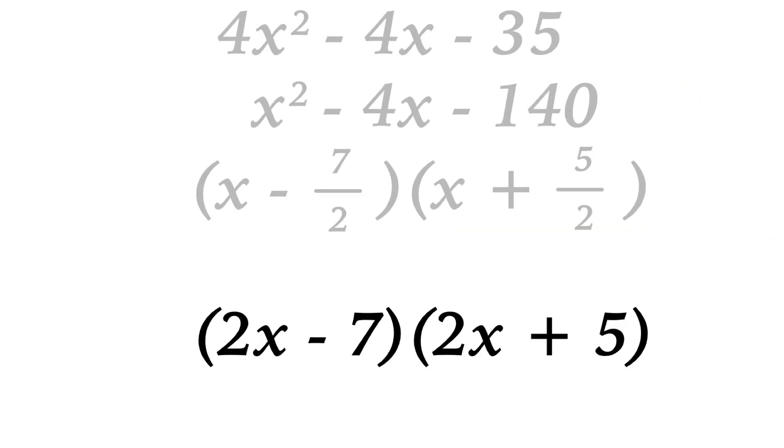And we use that 2 in the first, the 7 over 2. We take the denominator to be a leading coefficient and drop the 7. Again, the 2 in the denominator becomes a leading coefficient, and we bring down the 5. So 4x squared minus 4x minus 35 factors into 2x minus 7 and 2x plus 5.